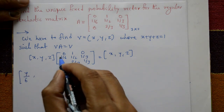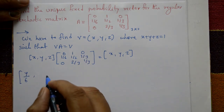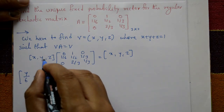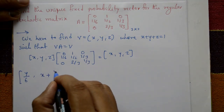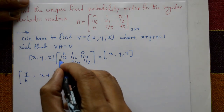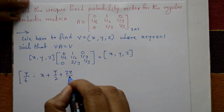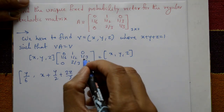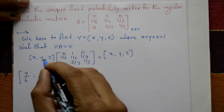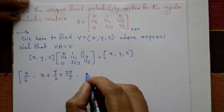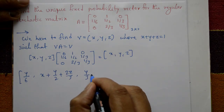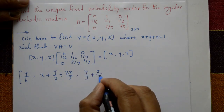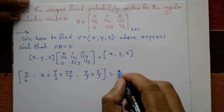The second element is x·1 + y·(1/2) + z·(2/3) = x + y/2 + 2z/3. The third element is x·0 + y·(1/3) + z·(1/3) = y/3 + z/3. This gives us the equation [y/6, x + y/2 + 2z/3, y/3 + z/3] = [x, y, z].